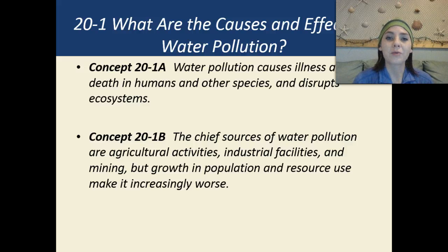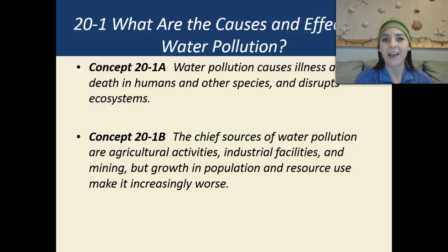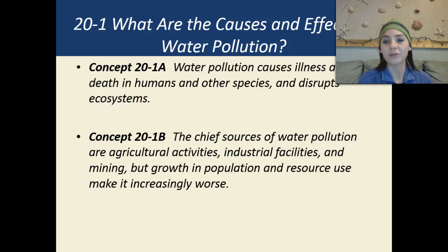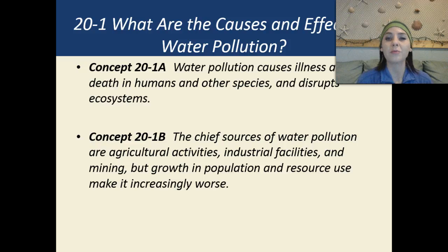In this unit, we're going to look at water pollution and how it causes illness and death in humans as well as other species, and it can also disrupt ecosystems. We're also going to be looking at the chief sources of water pollution, which are agricultural activities, industrial facilities, and mining. But growth in population and resource use make it increasingly worse.